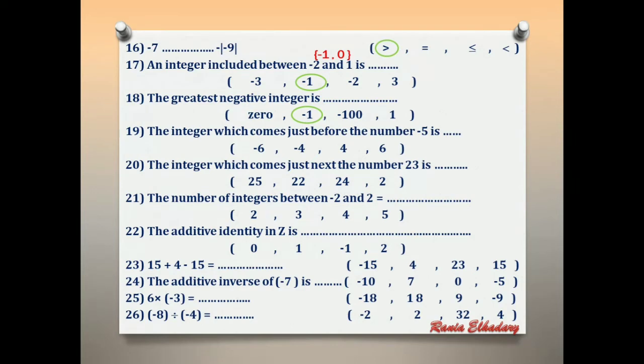Number 19: the integer which comes just before negative 5. 'Before' means less than. Less than negative 5 is negative 6.